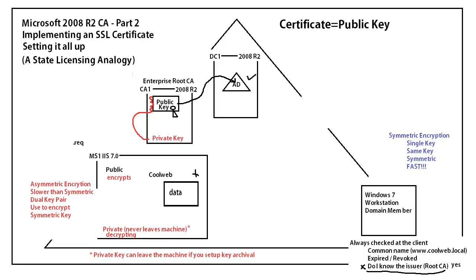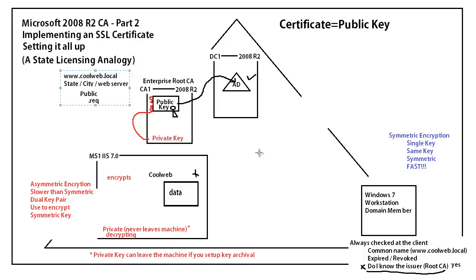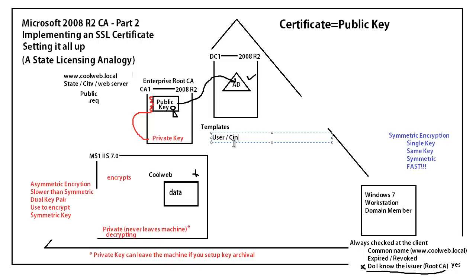Then we're going to generate this request file. In the request file, we're going to include the public key, and we're going to include some other information - things like the common name, like www.coolweb.local, the state, the city, and that it's a web server request that we're making. All this stuff is going to be included in this request. Then we grab this request and submit it to our server. The server has a whole list of templates - all the different types of certificates that can be issued, like a user certificate, a computer certificate, and a web server certificate.